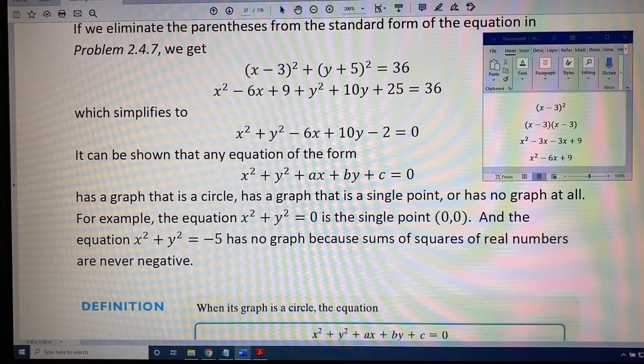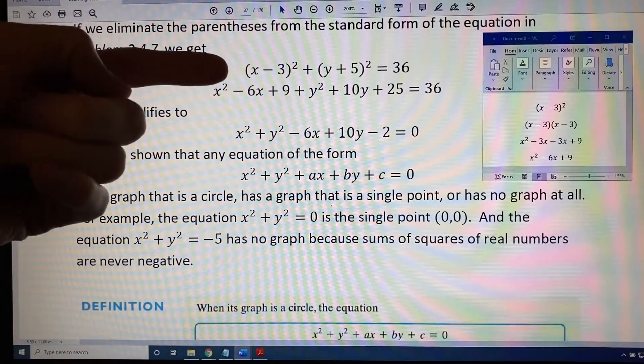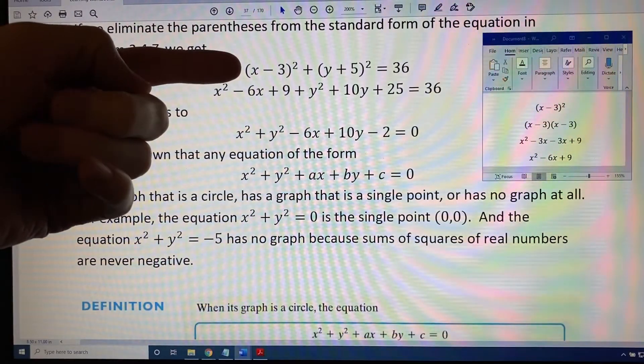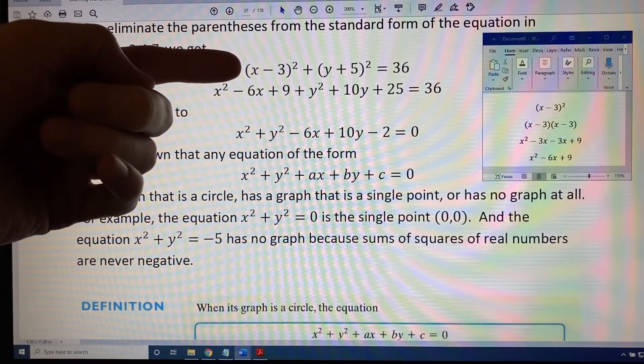The topic of this video is converting from standard form to general form. Consider the following standard form equation of a circle: (x - 3)² + (y + 5)² = 36.